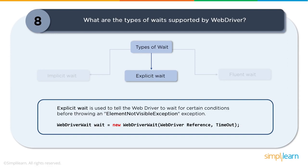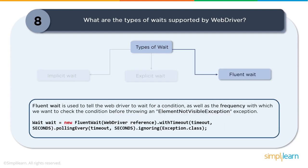Explicit wait is used to tell the WebDriver to wait for certain conditions before throwing an 'element not visible' exception. It is defined for specific expected conditions only — such as checking whether an element is displayed or clickable. These conditional waits are applied to a single web element, unlike the implicit wait which applies globally. It is recommended when elements take longer to load or when verifying properties like visibility or clickability.